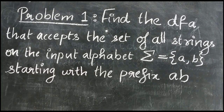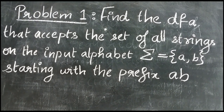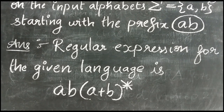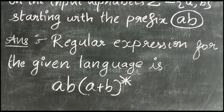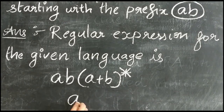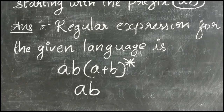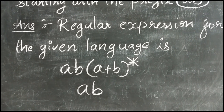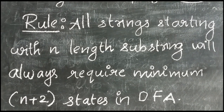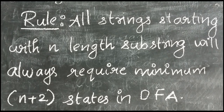Problem 1: find the DFA that accepts the set of all strings on the input alphabet A and B starting with the prefix AB. The regular expression for the given language is AB followed by combinations of A and B. The string AB itself is also accepted. Our first step is to decide the minimum number of states required in DFA. The rule is: all strings starting with an N-length substring will always require minimum N plus 2 states in DFA.